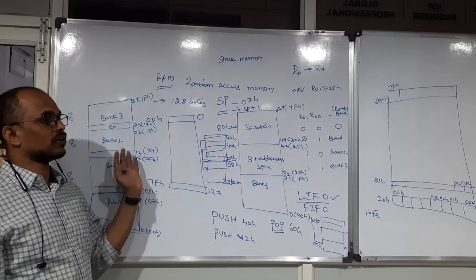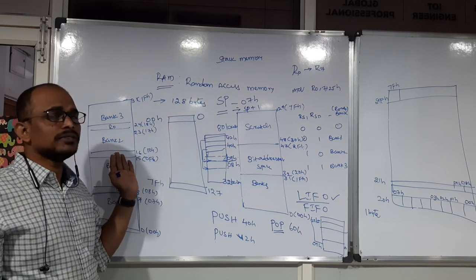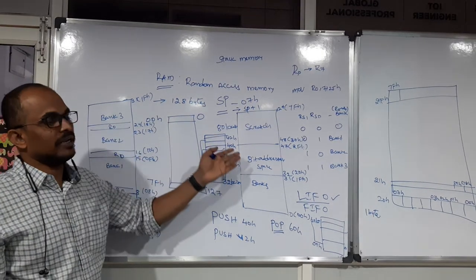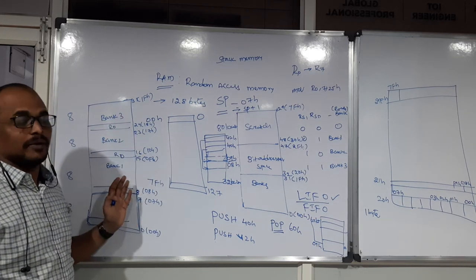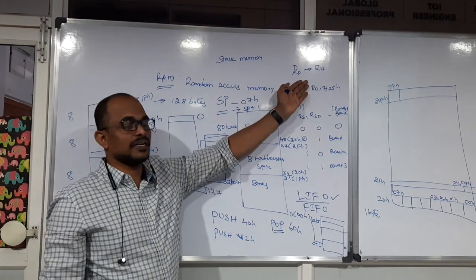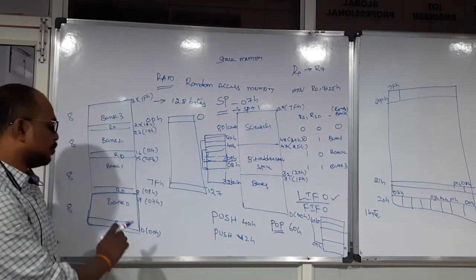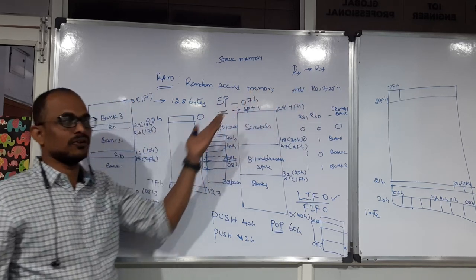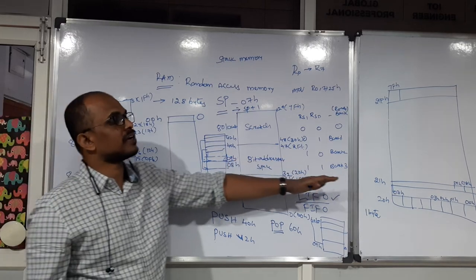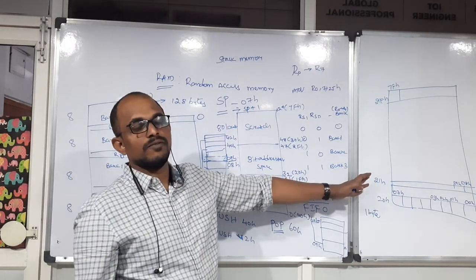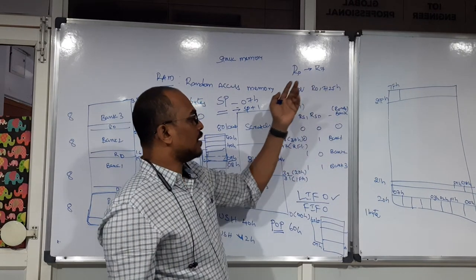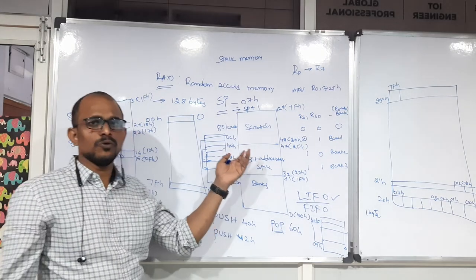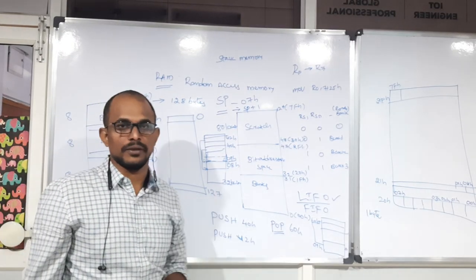In summary, RAM memory organization has three sections: Banks, Bit Addressable Space, and Scratch Pad Memory. Banks are divided into four — Bank 0, 1, 2, and 3 — and are used for general purpose register data storage. By default, registers occupy Bank 0 locations, but RS0 and RS1 bits can change the destination to other banks. Bit Addressable Space handles single-bit or byte operations, and Scratch Pad Memory works with direct addresses only. For more videos, please subscribe to our channel — Aerotech Solutions on YouTube. Thank you.